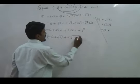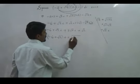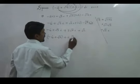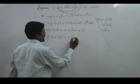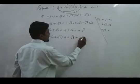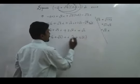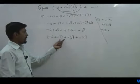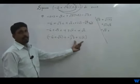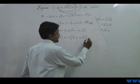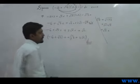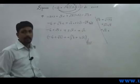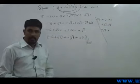The imaginary part is √3 plus 2√6. So the final answer is in the form a + ib where a = -6 + √2 and b = √3 + 2√6. Take another question.